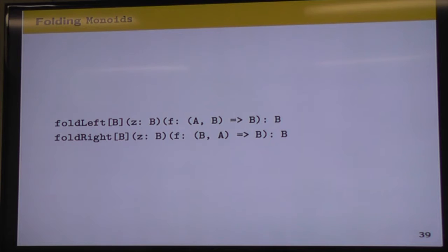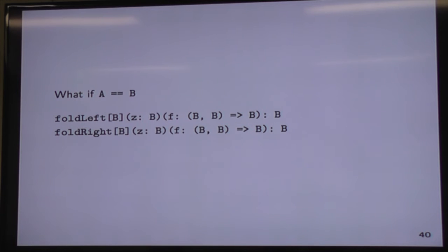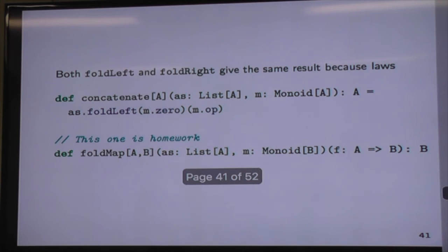Folds and monoids, they have a nice relationship. So if you look at the type signatures, the left and right folds, you'll see they take an element of some type B and a binary operation. Now, the binary operation takes two values of two different types, but there's nothing stopping us from making them the same type. So if everything's the same type, we now have essentially things that will fit the type signature for our identity element and our binary associative operation. So it looks like a monoid is a pretty good fit, at least at the type level for our folds.